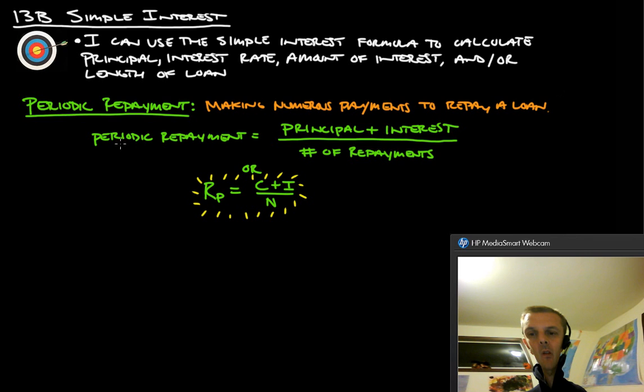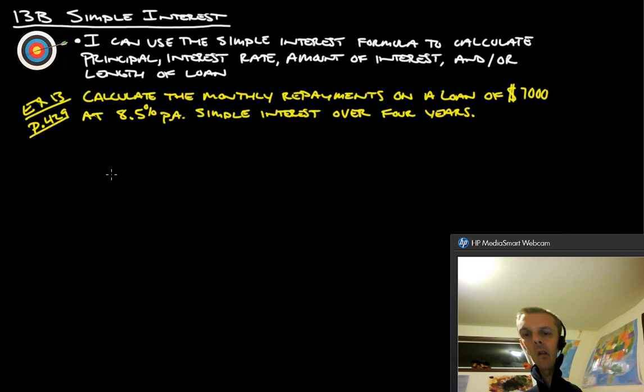So, the way you figure out a periodic repayment is you take the principal, which is your original investment, add the interest, and then divide by the number of repayments and that will tell you what your periodic repayment loan payment is. Alright? So, let's calculate the monthly repayments on a loan of $7,000 at 8.5% per annum simple interest over four years.